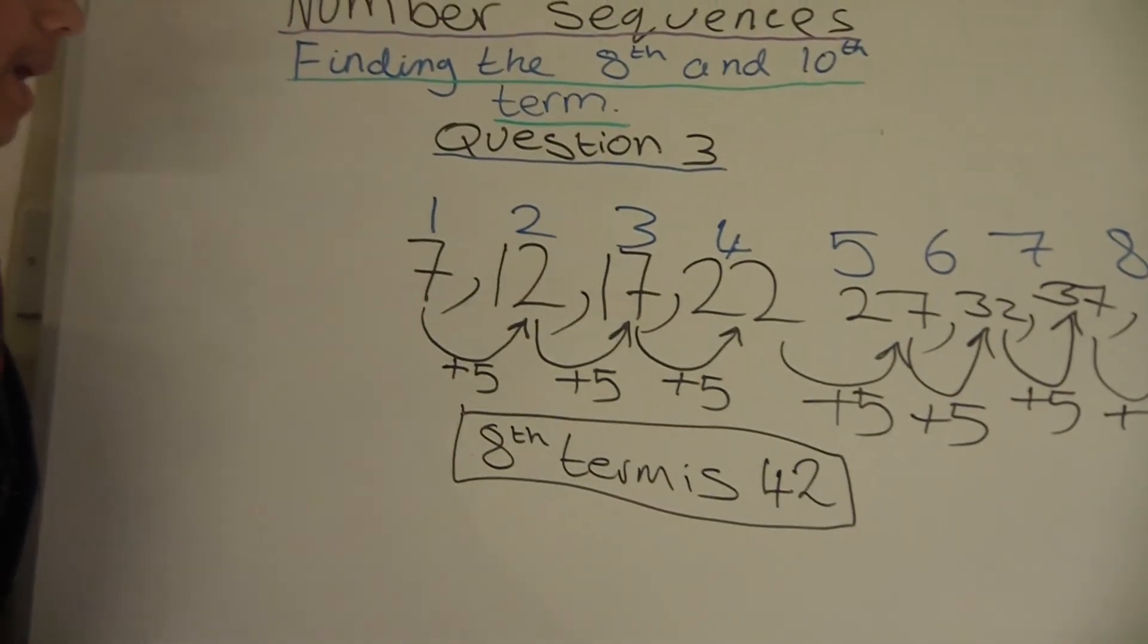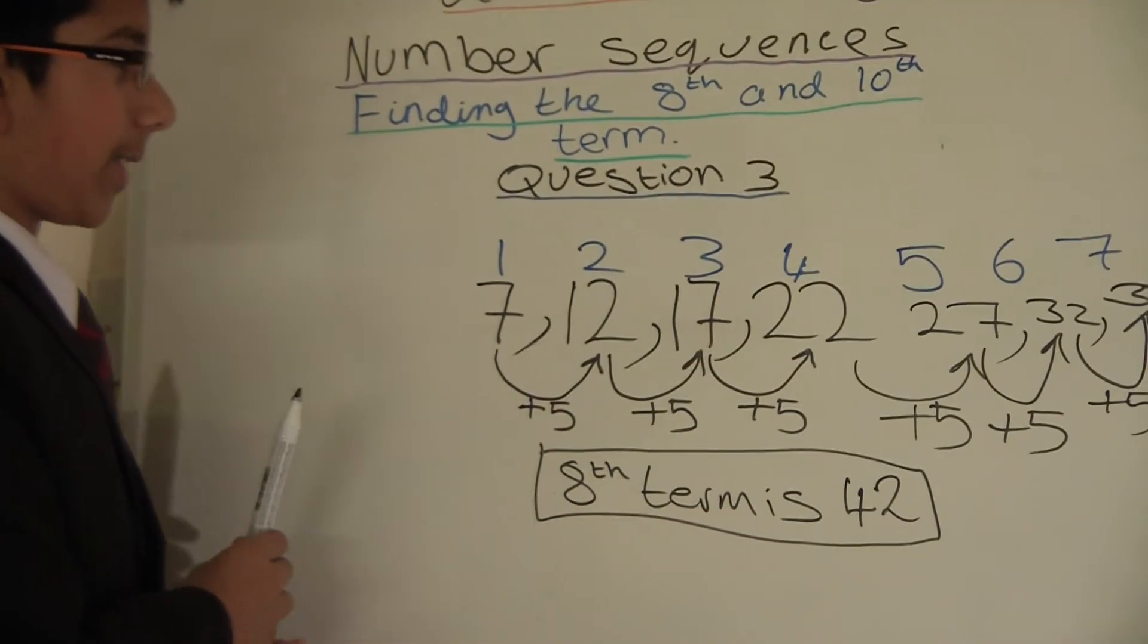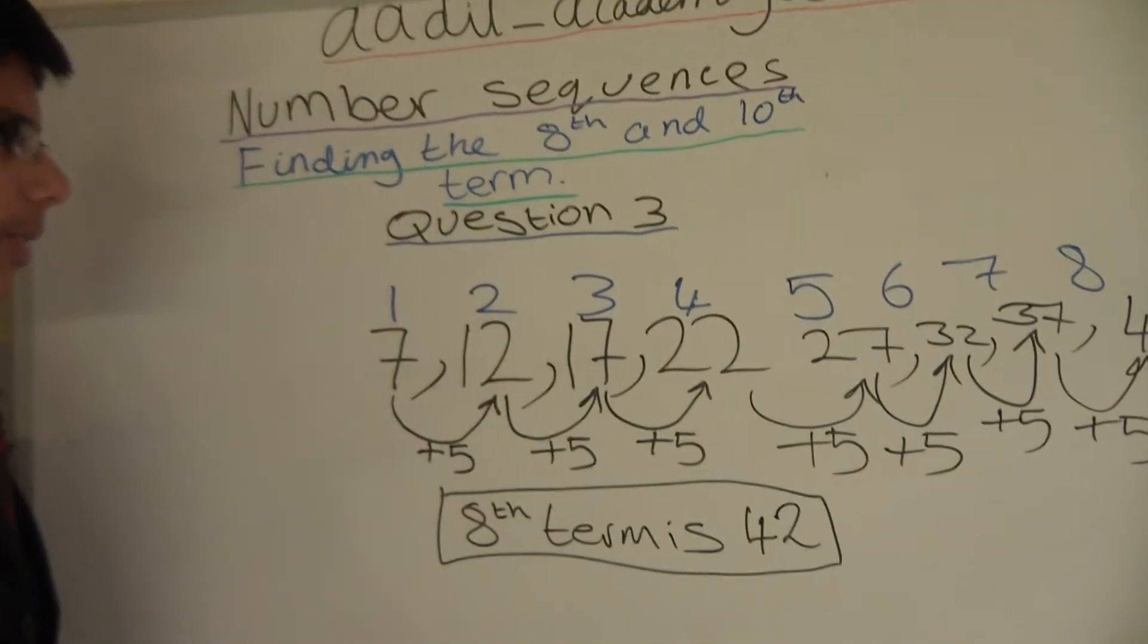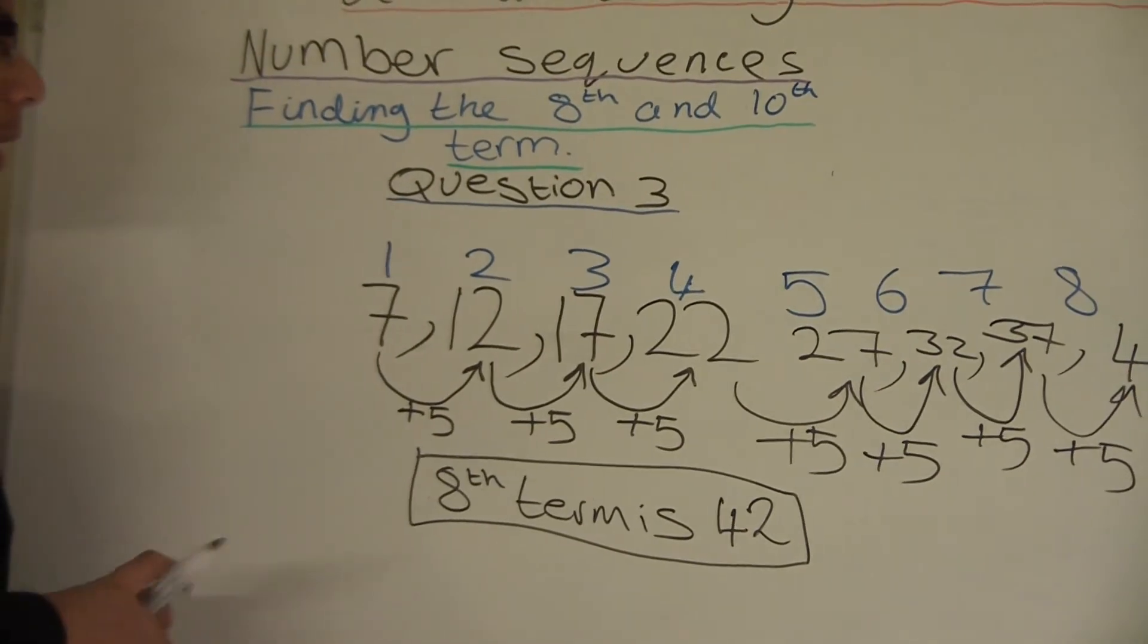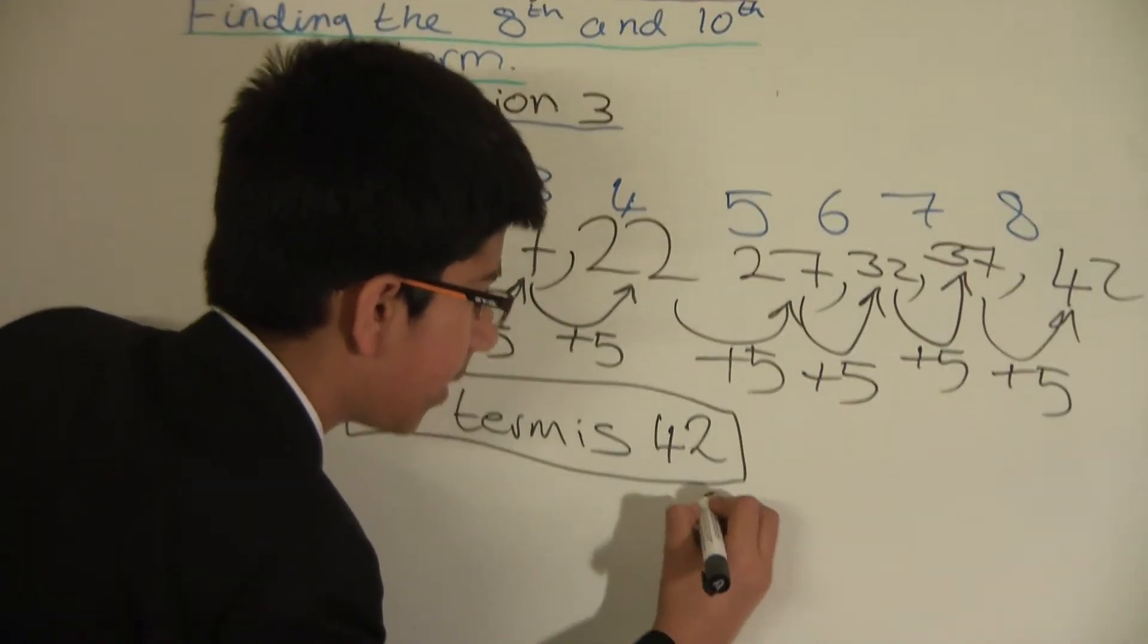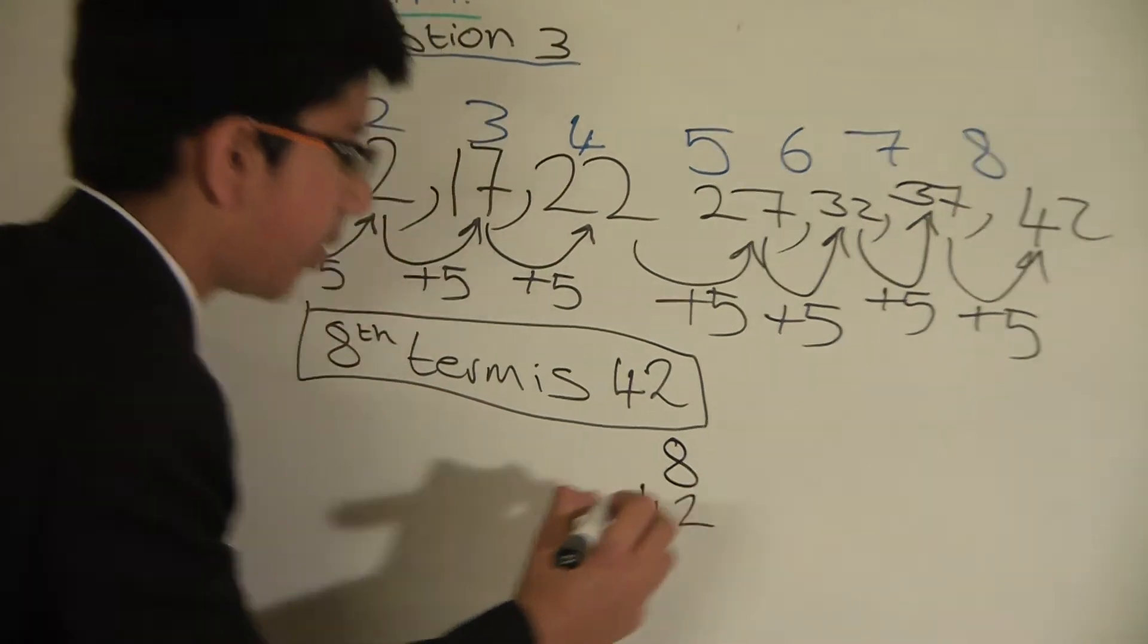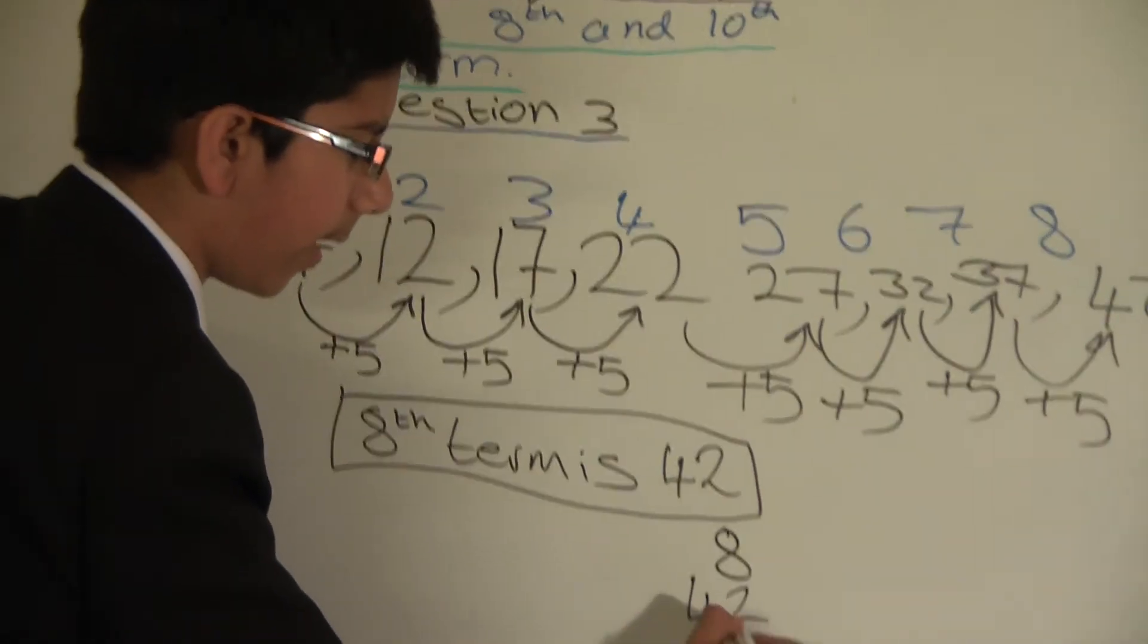Now we have to find the 10th term. And to do that we will use the same pattern as we have been doing to find the 8th term. So we will just write the 8th term down here: 8 and 42. And we will go from there. So keep on adding 5.